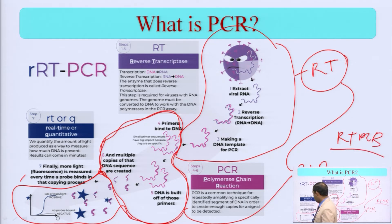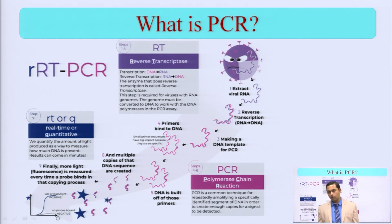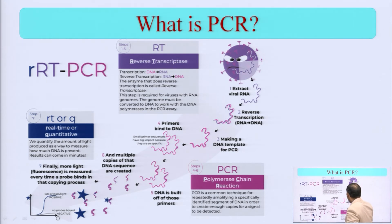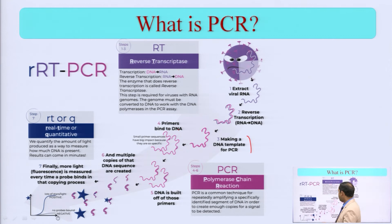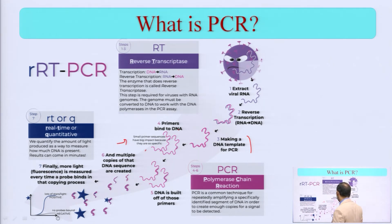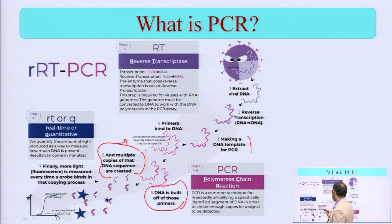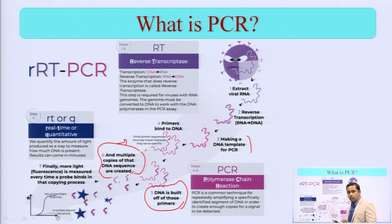Now you have the DNA template, so what do we do? We are going to do the PCR test. First, you are going to break the DNA — unwind it. Then you are going to add some primers. Small primer sequences have a high impact because they are very specific. DNA is actually built off those primers, and then you multiply the copy of the DNA sequence. Whatever the sequence you have created, you are going to multiply that thing.